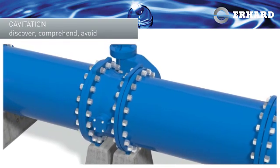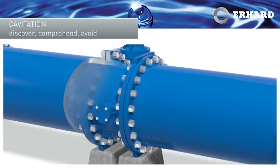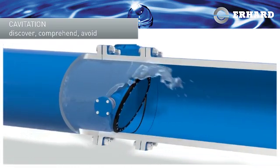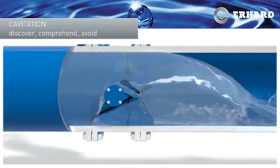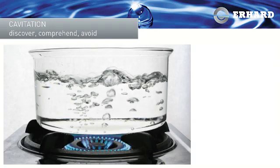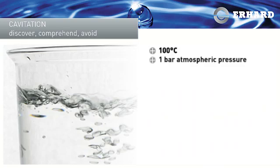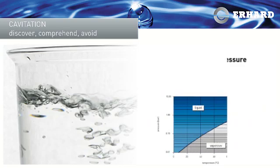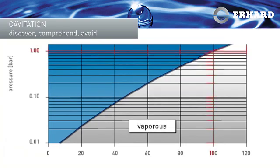Liquids, in our case water, evaporate due to a pressure drop and then liquefy again when the pressure rises. We all know that water evaporates at 100 degrees Celsius, but only at 1 bar atmospheric pressure. If the pressure drops, the boiling point of water drops too. At 0.02 bar pressure, for example, water boils at 18 degrees Celsius.